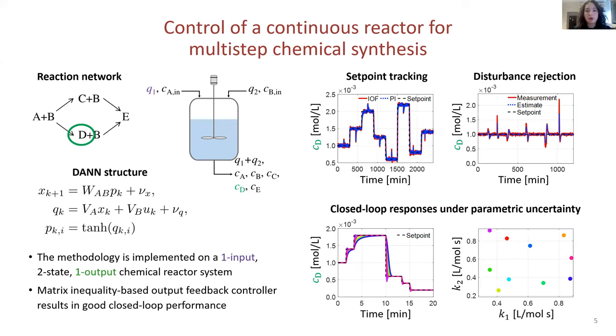The proposed approach was tested on a case study for a chemical process. For the reaction network given on the left, we are interested in controlling the concentration of D using the control input Q1. The continuous stirred tank reactor dynamics are modeled by a DANN. Our proposed criteria resulted in designs that have good closed-loop performance for various scenarios.